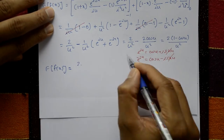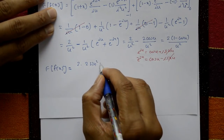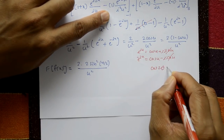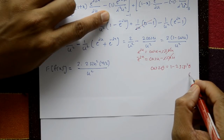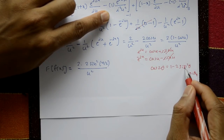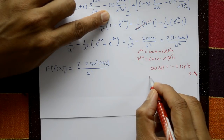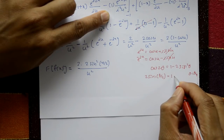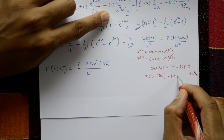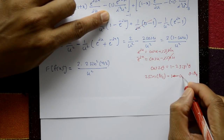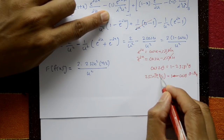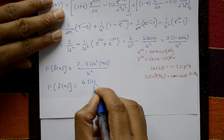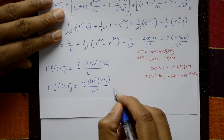Now f(u) = 2(1 minus cos u)/u². Using the identity cos 2θ = 1 minus 2·sin²θ, let θ become u/2: then 1 minus cos u = 2·sin²(u/2). So f(u) = 2 times 2·sin²(u/2) divided by u², which gives f(u) = 4·sin²(u/2) / u².